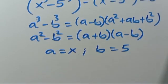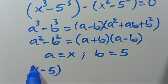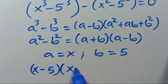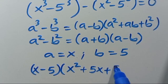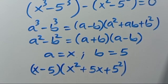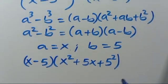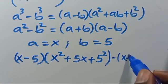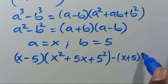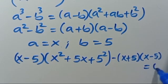So let's now substitute. For the first part, here will be X minus 5, then multiplied by X squared plus — since A is X and B is 5 — 5X plus 5 squared. Then from the second part, we have minus, giving us minus X plus 5 times X minus 5, everything equals 0.